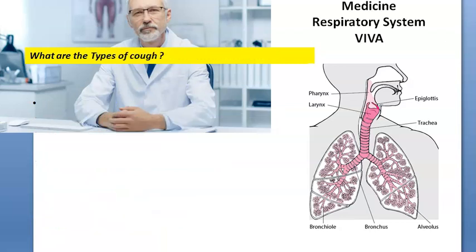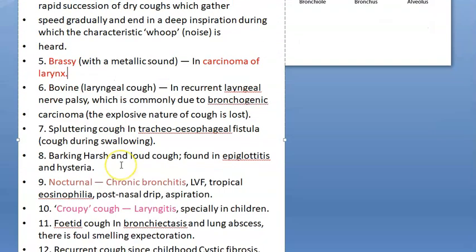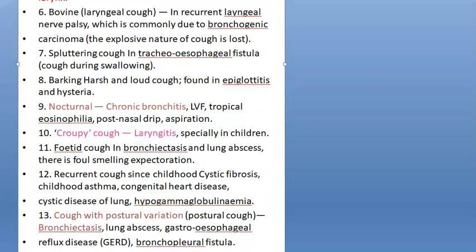What are the types of cough? Sir, cough can be dry cough, wet cough, whooping cough, brassy cough, bovine cough, nocturnal cough, croupy cough, recurrent cough, etc. Wet productive cough we can see in bronchiectasis. Brassy cough we can see in carcinoma of larynx. Nocturnal cough in chronic bronchitis. Croup we can see in laryngitis. Postural variation of cough we can see in bronchiectasis.